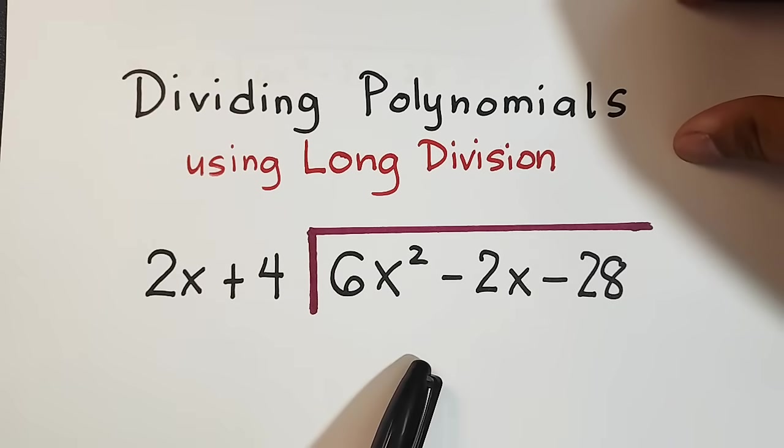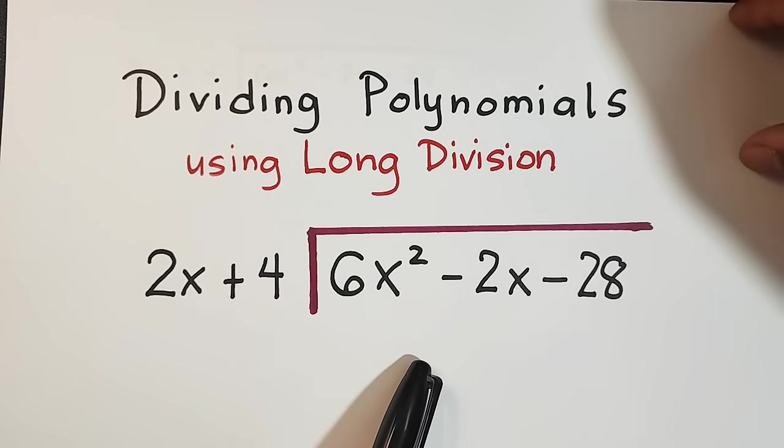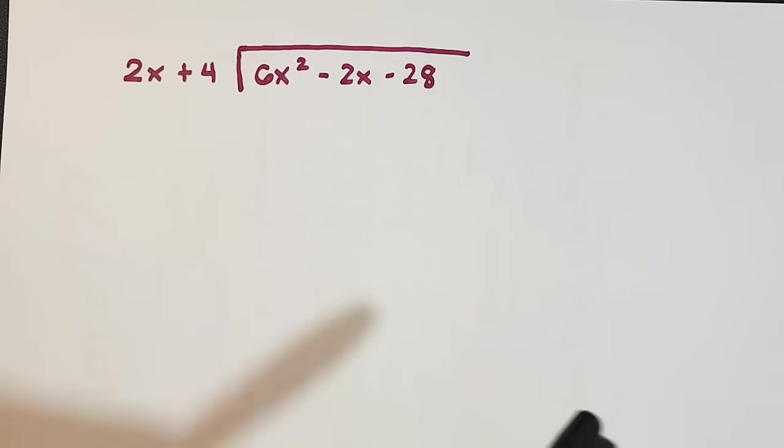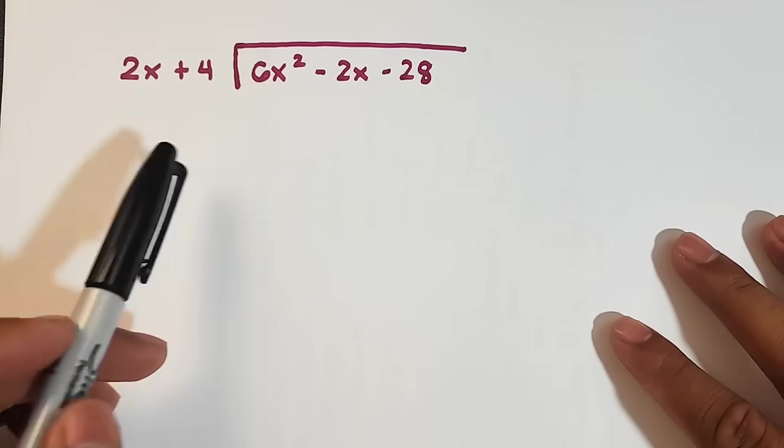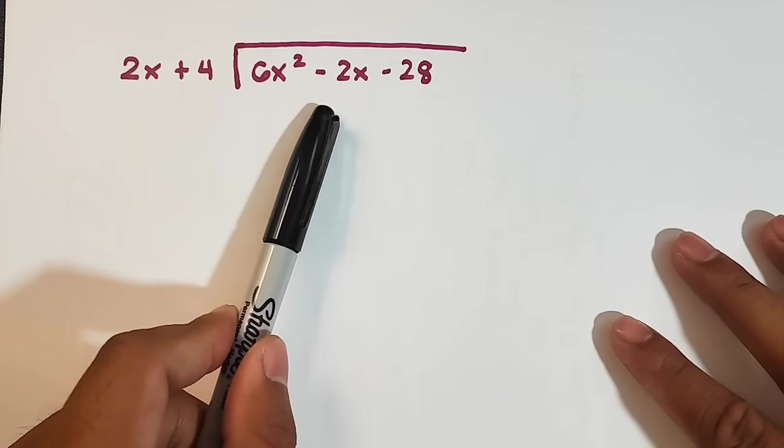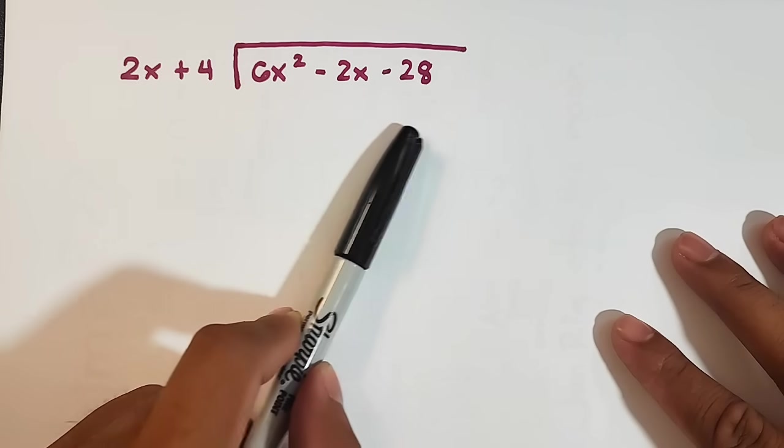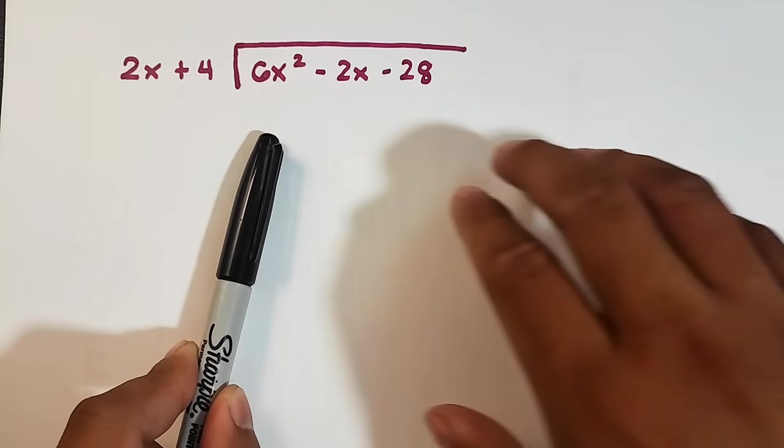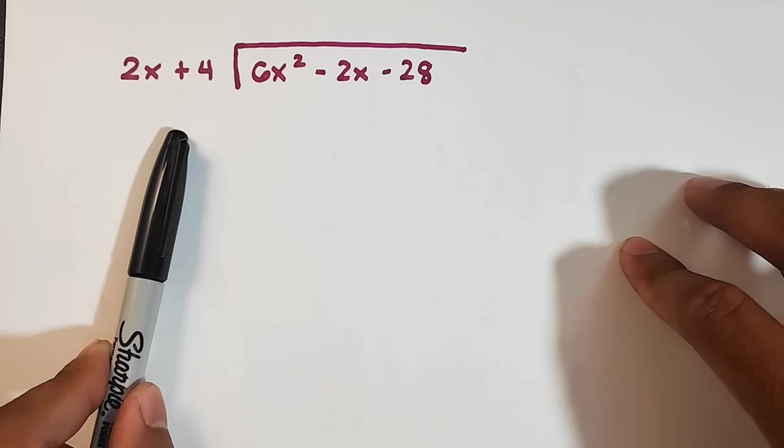So what we have here is the first problem and then later on we will continue solving another problem. So this is the problem guys. We have 6x squared minus 2x minus 28 divided by 2x plus 4. So this is your dividend and this is your divisor.